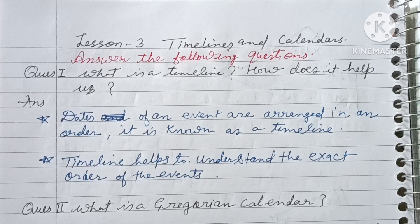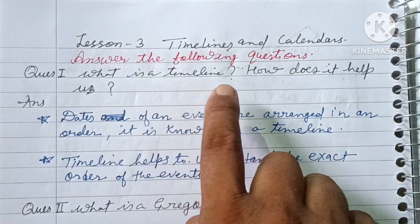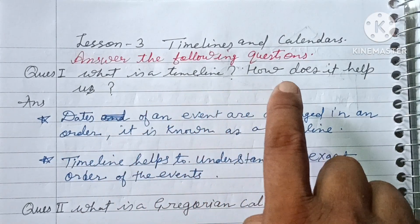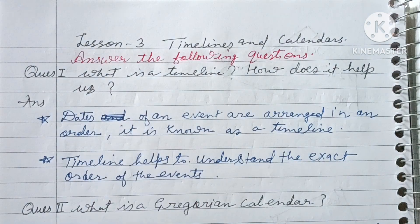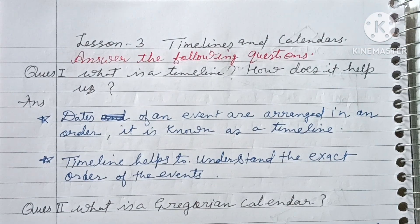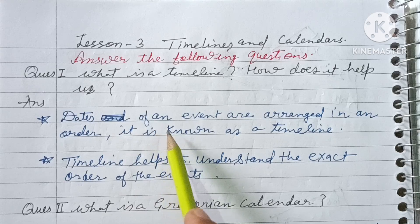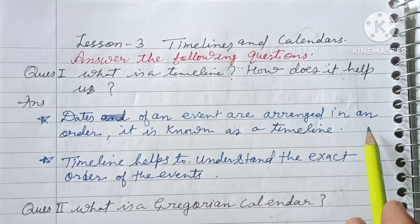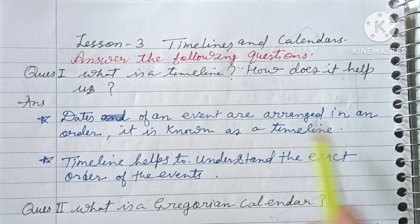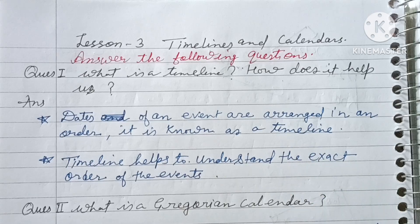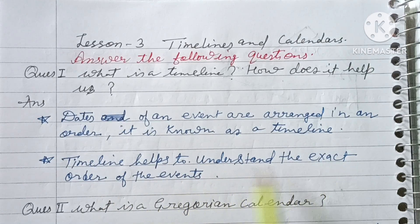Question 1: What is a timeline and how does it help us? Answer: Dates of events are arranged in an order — this is known as a timeline. The timeline helps us to understand the exact order of events.